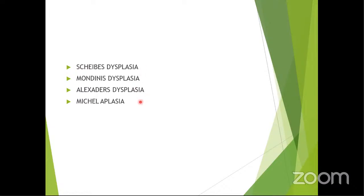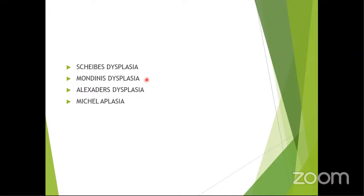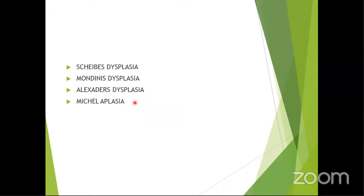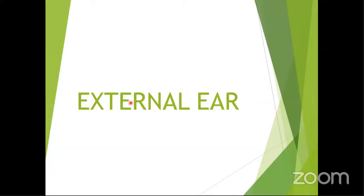The MCQ question is: cochlear implantation can be done in all the following anomalies except which one? The answer is Michel's aplasia, because all the other dysplasias affect one part of the inner ear, whereas Michel's aplasia is complete non-development of the cochlea, so cochlear implantation is of no use. What can help the patient in Michel's aplasia is a brainstem implant.